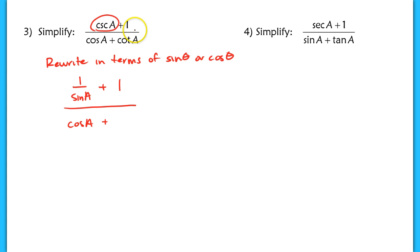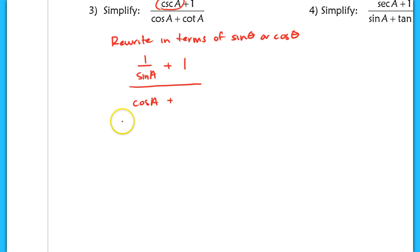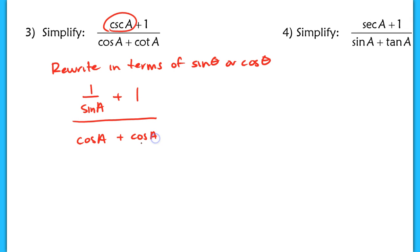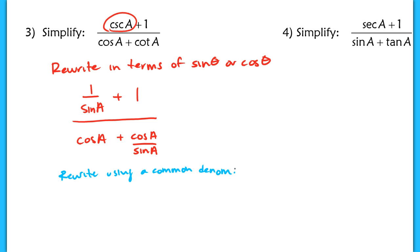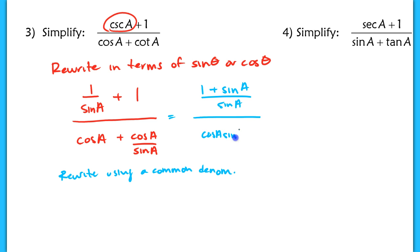Another strategy when simplifying trig expressions is to rewrite using a common denominator. In the numerator of this overall expression, the common denominator is sine of a, so we rewrite as 1 plus sine of a over sine of a. In the denominator, the common denominator is also sine of a, giving cosine a times sine a plus cosine a, all over sine of a. We're rewriting both the top and bottom in terms of a common denominator.